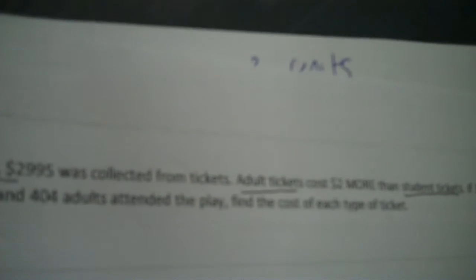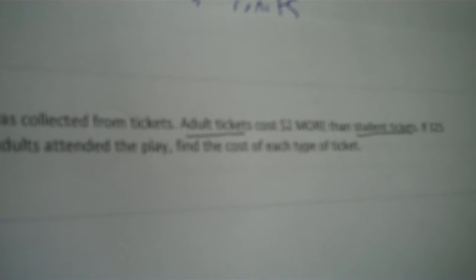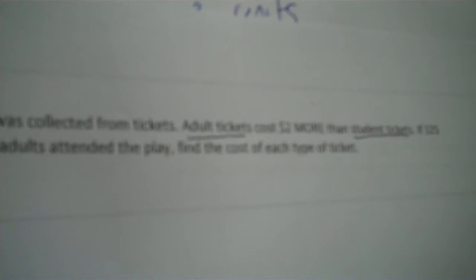Out of play, $2,995 was collected from tickets. Adult tickets cost $2 more than student tickets. If 325 children and 404 adults attended the play, find the cost of each type of tickets. You got 3 units. So together. Then you got how many units per unit in total. So you got adults and students. And then dollars total, dollars per unit.